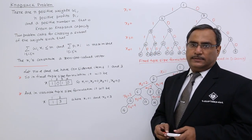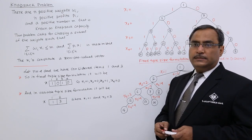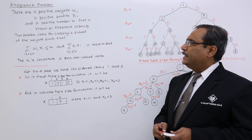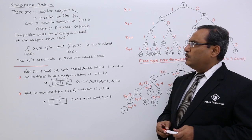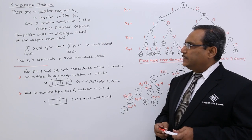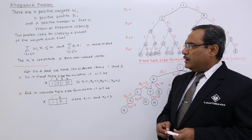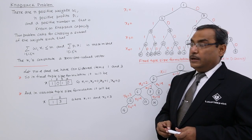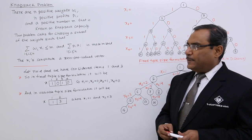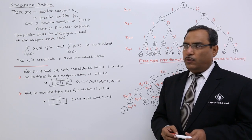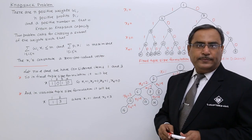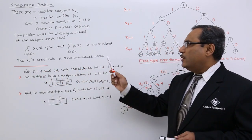There are n positive weights w_i, where i is ranging from 1 to n, n positive profits p_i, and a positive number m that is known as the Knapsack capacity. This problem calls for choosing a subset of the weights such that sigma (i=1 to n) w_i * x_i is less than or equal to m, which is the Knapsack capacity, and sigma (i=1 to n) p_i * x_i is maximized. Here x_i constitutes a 0-1 valued vector.